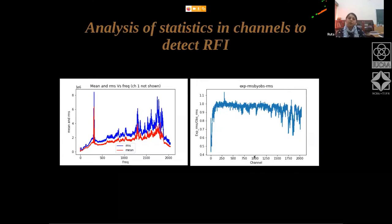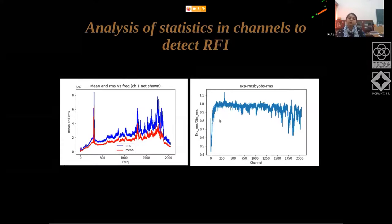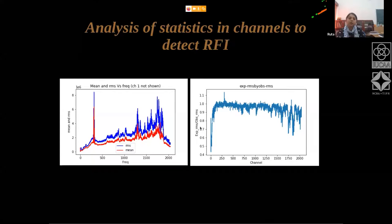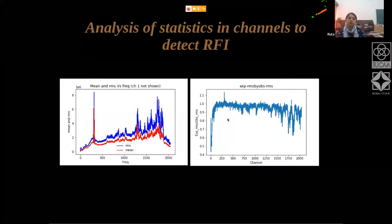You can use the individual channel resolution in frequency, multiplied by the number of spectra you're averaging over — delta-t and delta-nu — to arrive at an expected RMS for that channel. From the data you have the observed RMS, and this ratio can show you where there is deviation from the expected RMS.